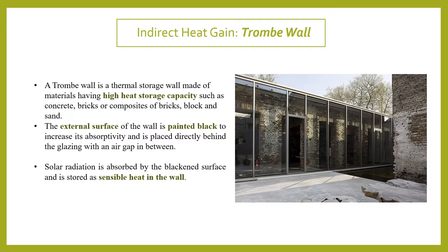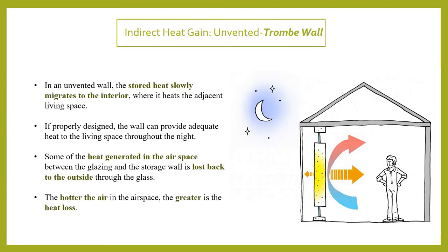For indirect heat gain, we first talk about the Trombe wall. A Trombe wall is a thermal storage wall with a high heat storage capacity, mostly made of bricks. The external surface of the bricks is painted black so the wall can absorb a lot of heat. In front of this black wall you have a glass wall, which absorbs heat and lets it store in the air gap between the glass and the wall.